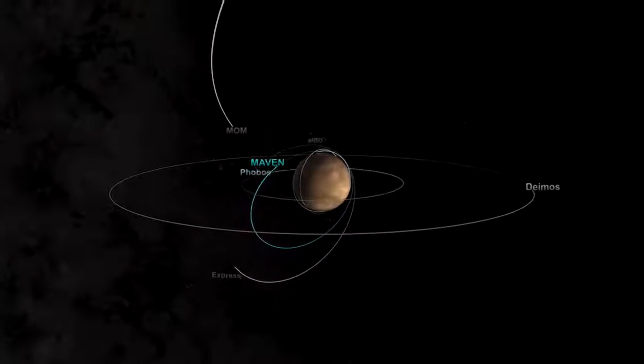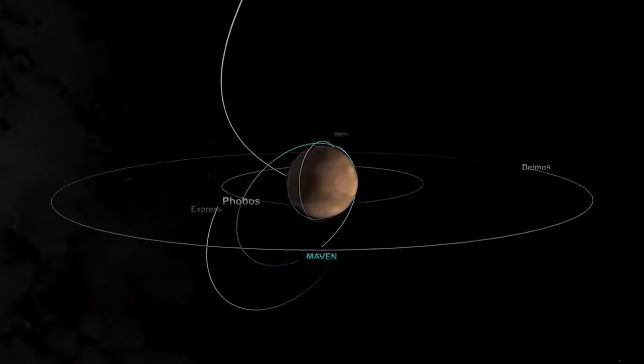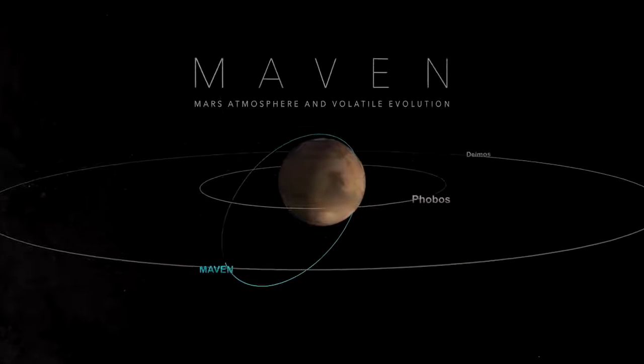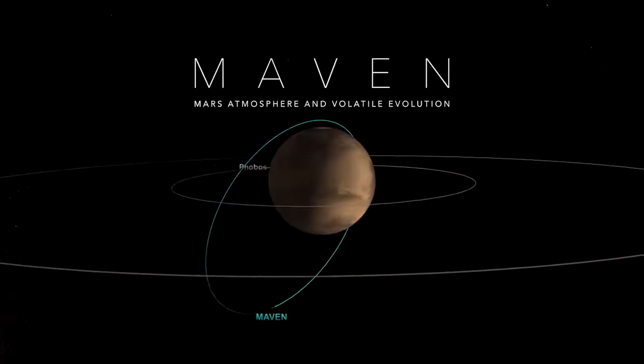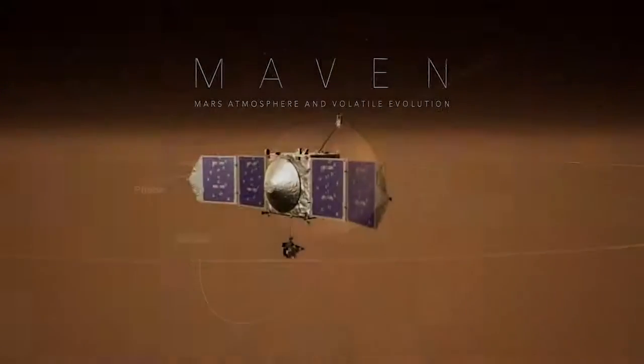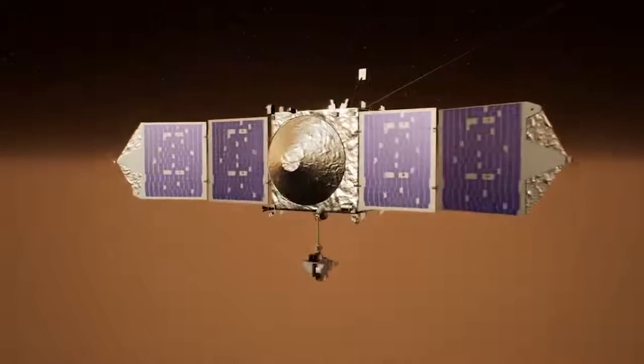MAVEN is a spacecraft that's orbiting Mars. It's been there since 2014. MAVEN in this case is an acronym. It stands for Mars Atmosphere and Volatile Evolution, and this gives a clue as to what MAVEN's real goal is.